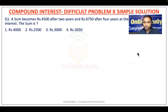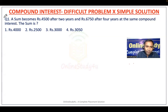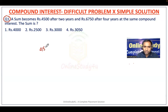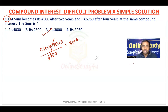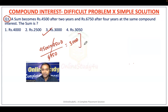Now question number one. With the help of shortcut techniques, in one line we can solve: a sum becomes 4500 after two years and 6750 after four years. So divide 4500 squared by 6750 and you will be getting 3000. Option C will become the correct answer. This is the shortcut technique. I will tell you how you can find this shortcut or what is the logic behind it.